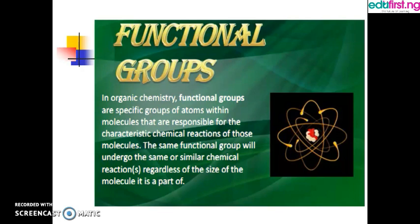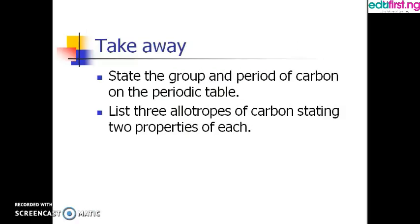We're going to stop here for today. The takeaway for this class is: one, state the group and period of carbon on the periodic table; and two, list three allotropes of carbon, stating two properties of each. Thanks for listening.